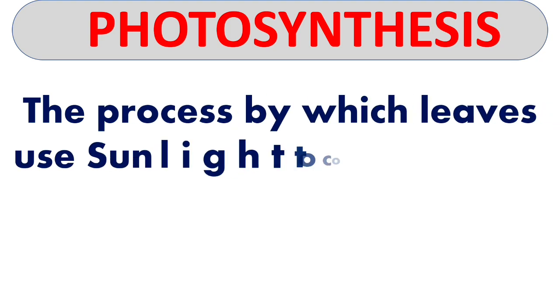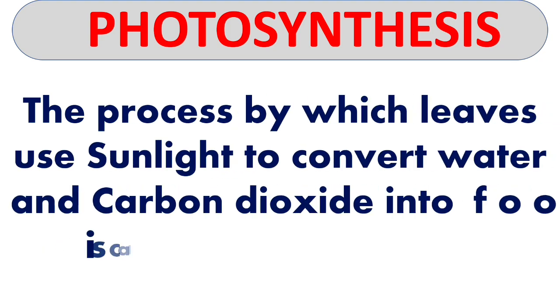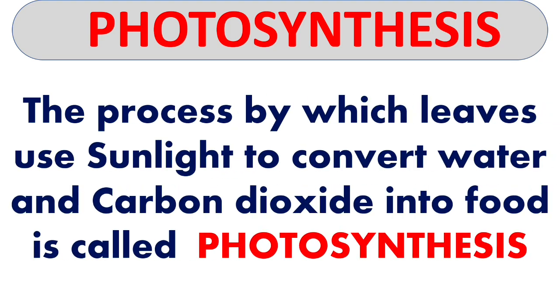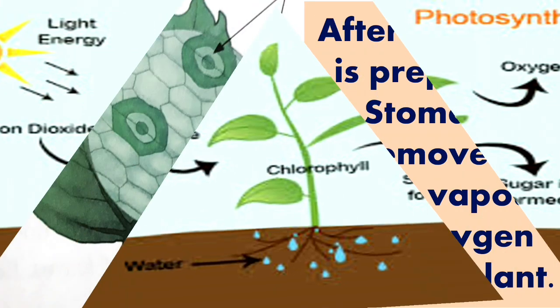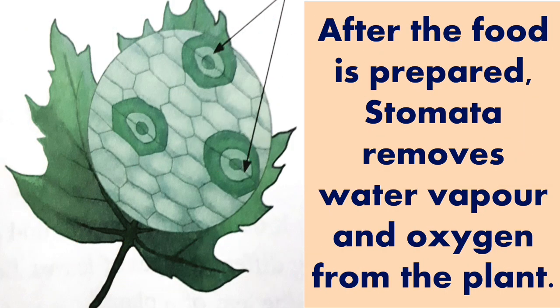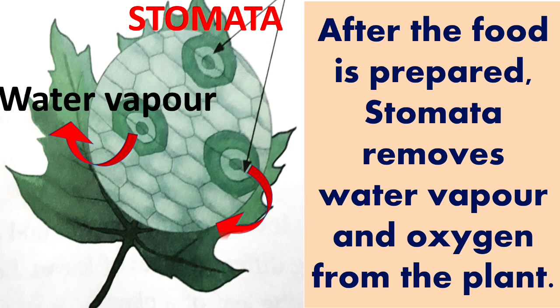Next is photosynthesis. The process by which leaves use sunlight to convert water and carbon dioxide into food is called photosynthesis, as you can see in this picture. After the food is prepared, stomata removes water vapor and oxygen from the plant.